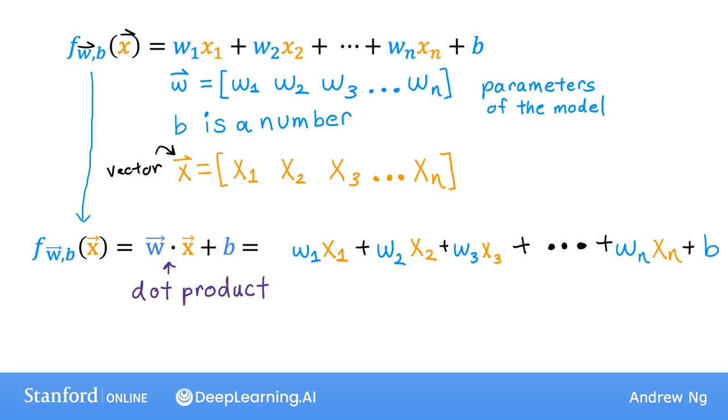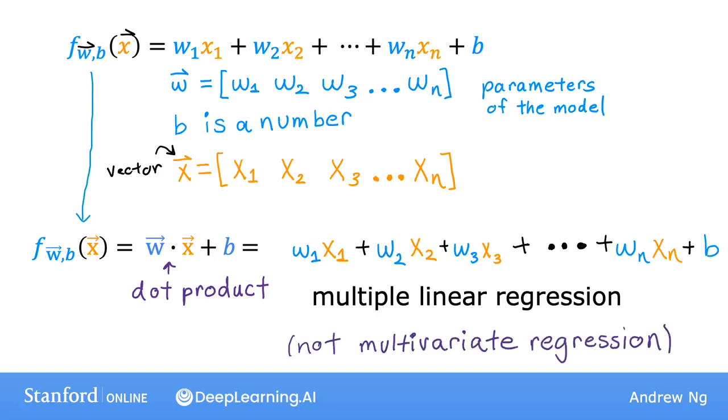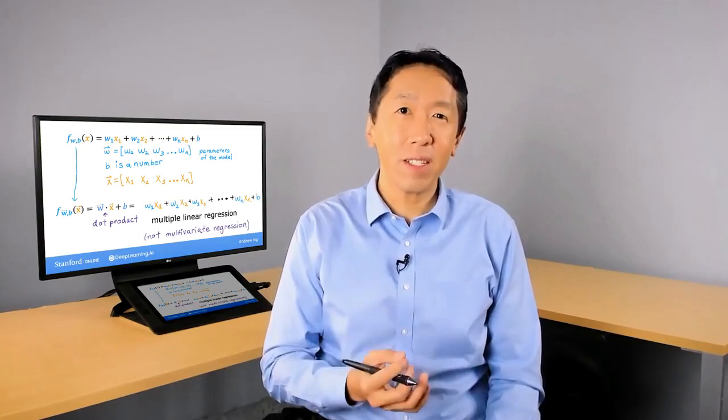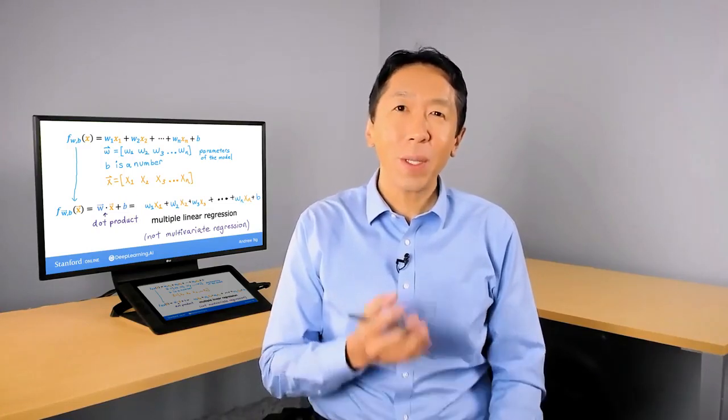The name for this type of linear regression model with multiple input features is multiple linear regression. This is in contrast to univariate regression, which had just one feature. And by the way, you might think this algorithm is called multivariate regression, but that term actually refers to something else that we won't be using here. So I'm going to refer to this model as multiple linear regression. And so that's it for linear regression with multiple features, which is also called multiple linear regression. In order to implement this, there's a really neat trick called vectorization, which will make it much simpler to implement this and many other learning algorithms. Let's go on to the next video to take a look at what is vectorization.